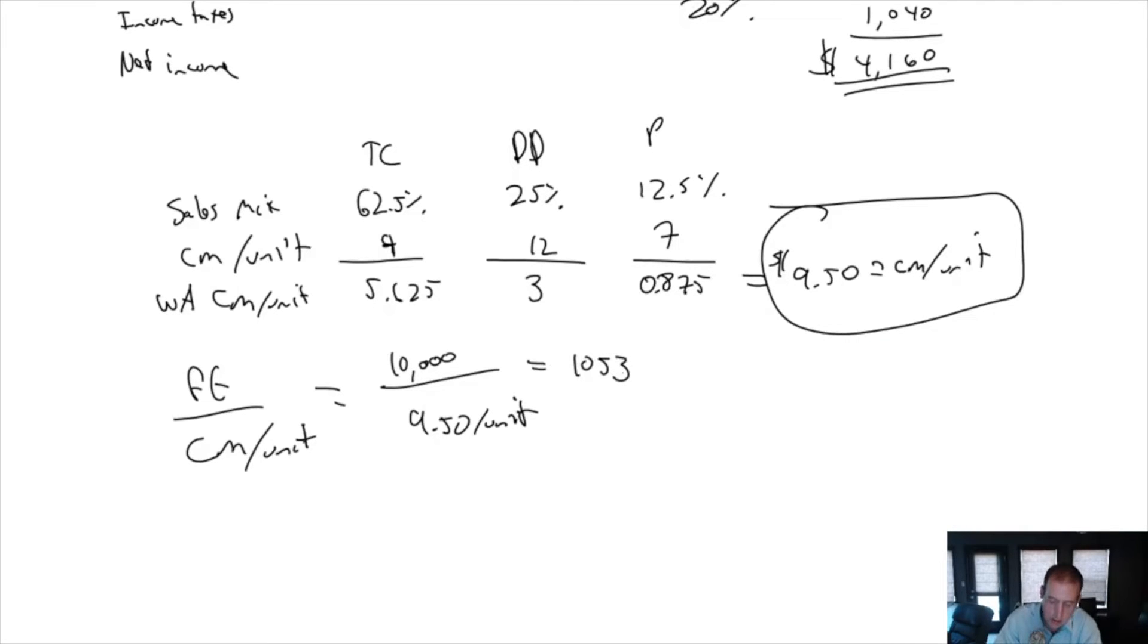$10,000 divided by $9.50 is 1,053. I need to sell 1,053 entrees, whether it be thin crust, deep dish pizzas, or pasta dishes. I need to sell 1,053 of them in a month to break even. So if there's 30 days in a month, it's about 35 dishes per day. It's a great sort of sniff test to the viability of the company.